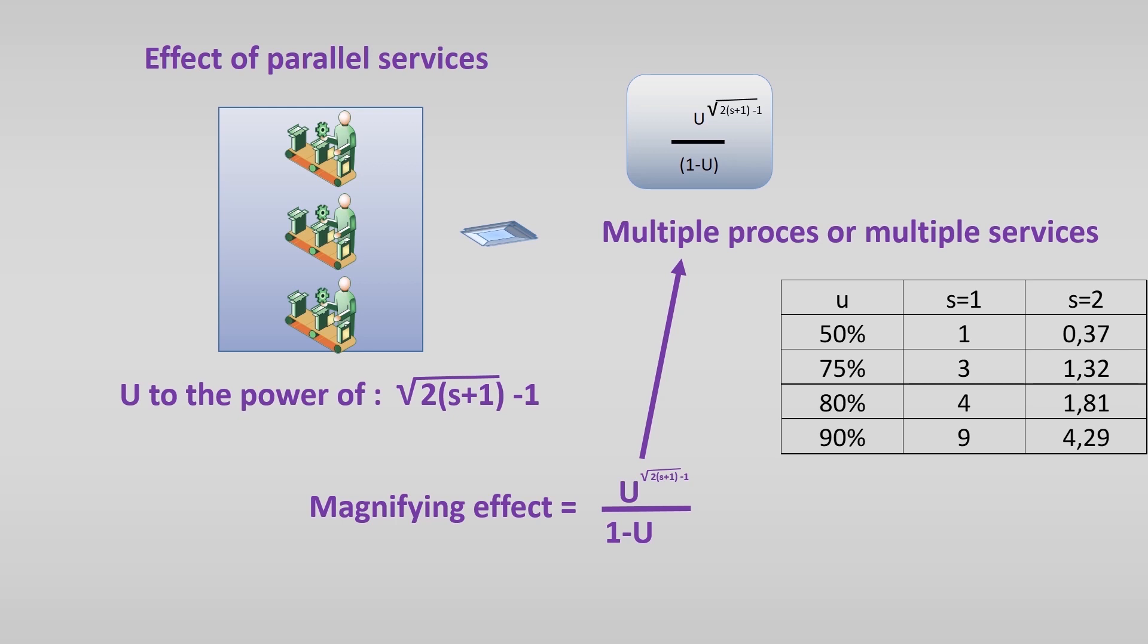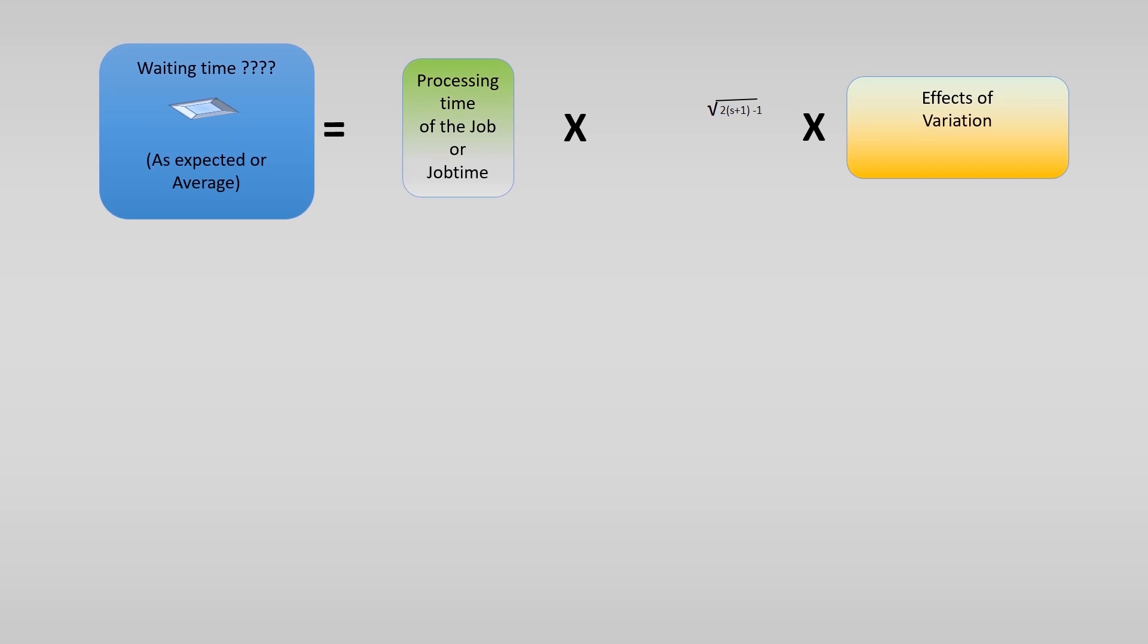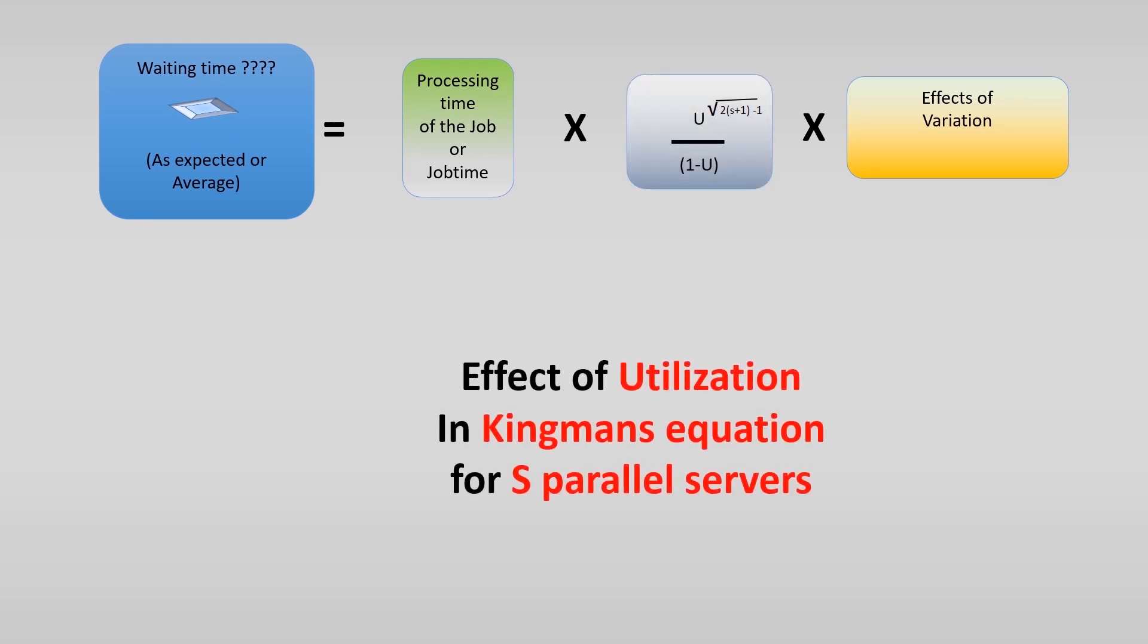This concludes the effect of utilization in Kingman's equation. We took variation on the utilization into account and the effect of more machines or servers, to calculate an approximation of the waiting time before a process. In the next video, we explain a little more about the effects of variation, although some has already been covered in this explanation.